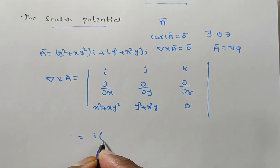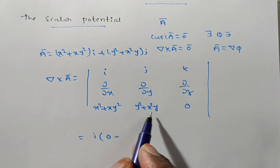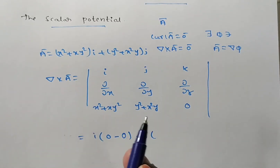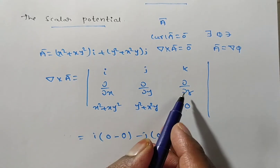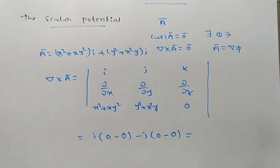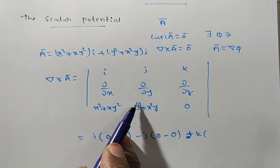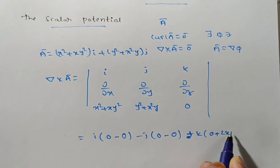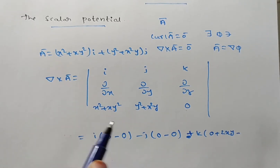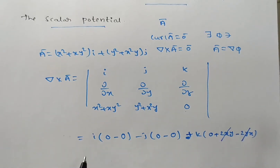Expanding the determinant: the i-component is ∂/∂y(0) − ∂/∂z(y² + x²y). Since (y² + x²y) is independent of z, this derivative is 0. The j-component is −[∂/∂x(0) − ∂/∂z(x² + xy²)], which is also 0 since x² + xy² is independent of z. The k-component is ∂/∂x(y² + x²y) − ∂/∂y(x² + xy²), giving 2xy − 2xy = 0.